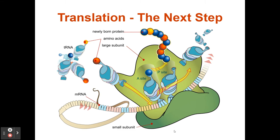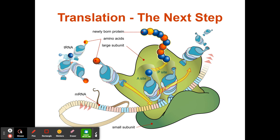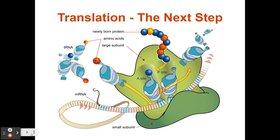Hey guys, welcome to AP Biology in the Gene to Protein Lecture Series. This is lecture number two, and we are going to be talking about translation. In this picture, I want you to notice the main players: the ribosome, which is the large green structure composed of two parts — the small and large subunit. We see the messenger RNA molecule moving through the ribosome, the tRNA or transfer RNA, and also the protein exiting the ribosome.